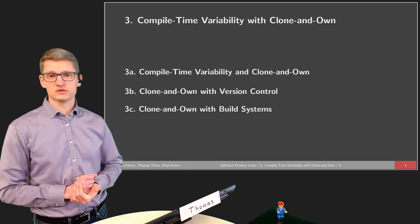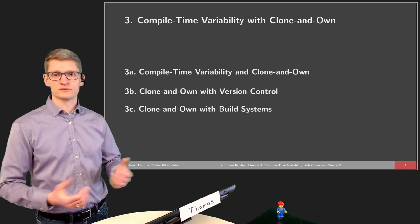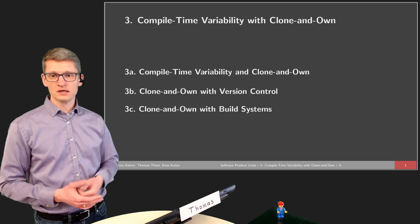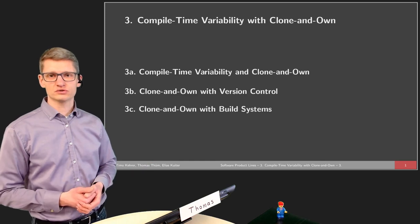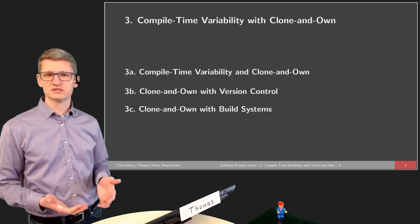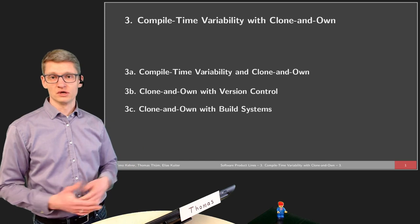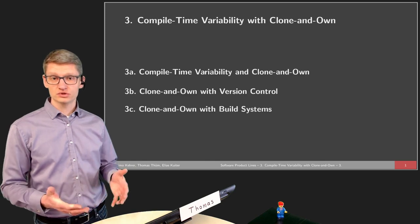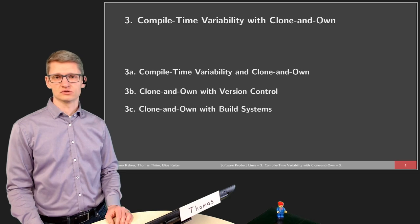We will talk about the concept of clone and own, which basically gives us a possibility to produce new software variants in a very ad hoc and easy manner. In the second part we will see how clone and own can be improved by means of version control systems. And in the third part we will take a closer look at build systems, which are used similar to version control for most software systems, and how we can make use of them for software variability.